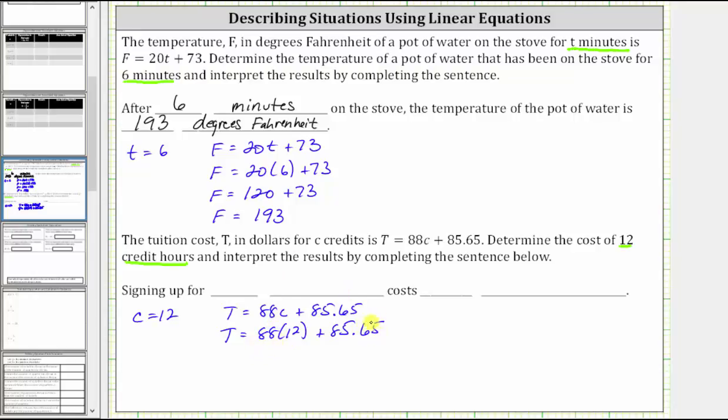And now we simplify the right side of the equation. 88 times 12 equals 1056, giving us T, the tuition cost in dollars.